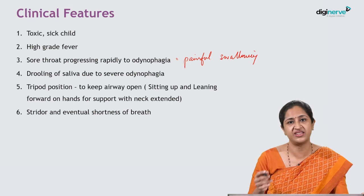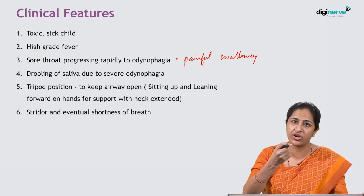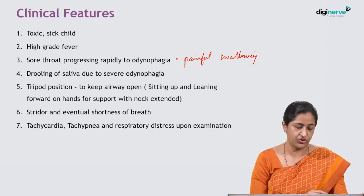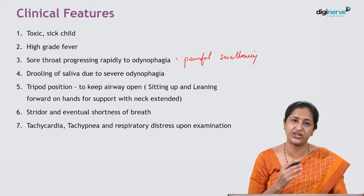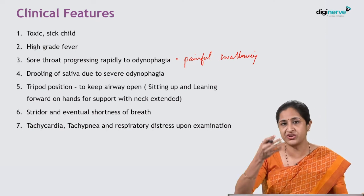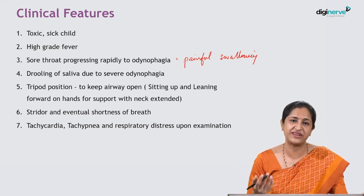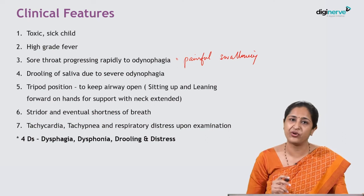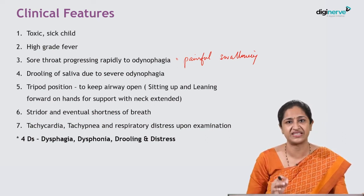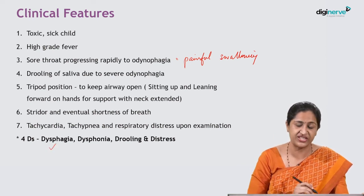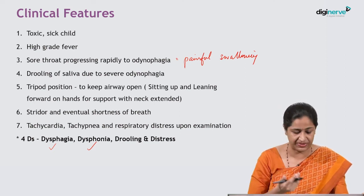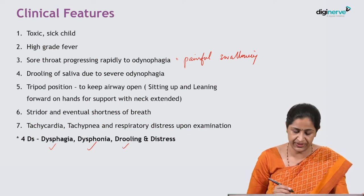Stridor eventually develops and there is shortness of breath as the airway becomes more and more narrow. On examination, you find tachycardia because of sepsis, high-grade fever, tachypnea, and respiratory distress with stridor and intercostal and subcostal retractions. Remember the mnemonic: the 4 Ds of acute epiglottitis — dysphagia, dysphonia (because the vocal cords in the same area also develop inflammatory edema), drooling, and respiratory distress.